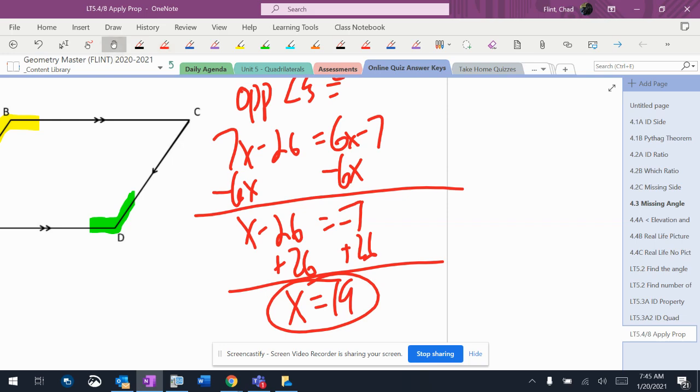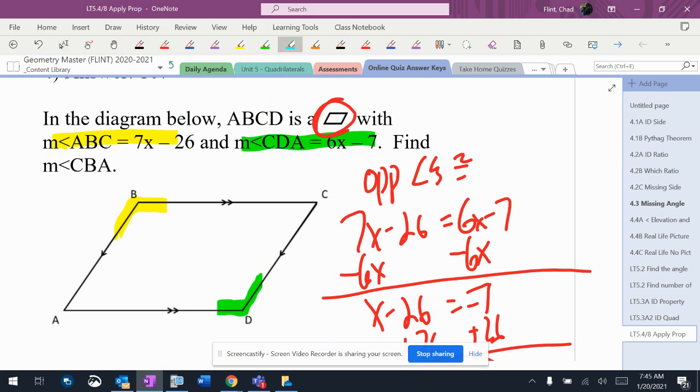We're going to get 19 for x. Now I've got to see what angle it wants to know. It wants to know CBA. CBA is the yellow angle, so I need to plug it back into the yellow angle.